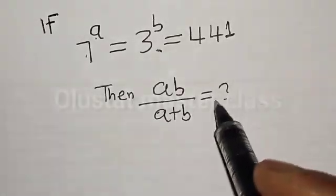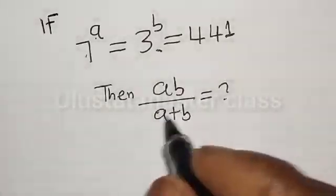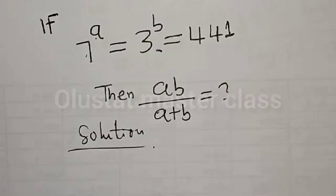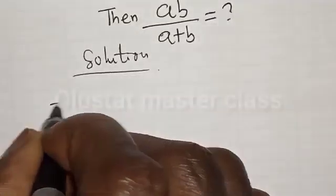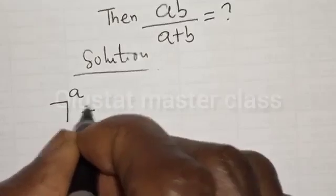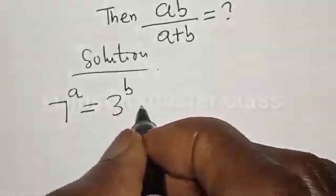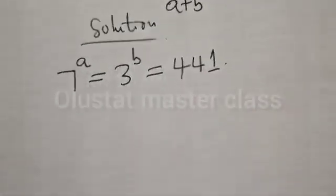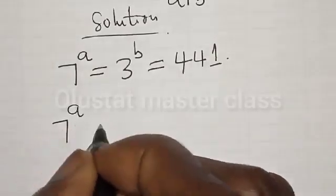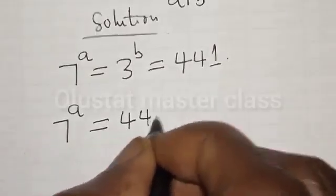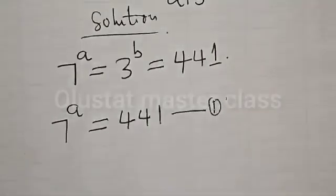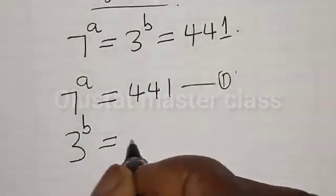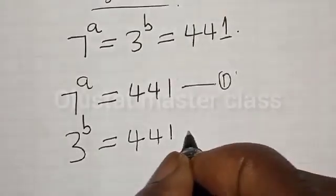Please don't forget to like, share, comment, and subscribe. Solution. We have the given equation: 7 raised to power A is equal to 3 raised to power B, which is equal to 441. Then we have 7 raised to power A is equal to 441 — let's call this equation 1. Also, 3 raised to power B is equal to 441 — let's call this equation 2.